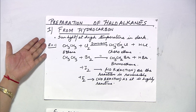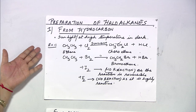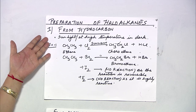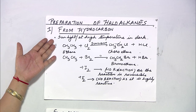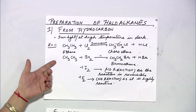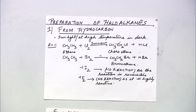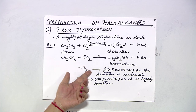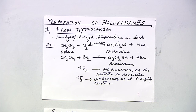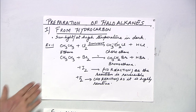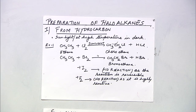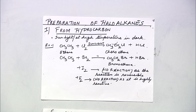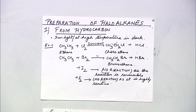Let us learn about the preparation of haloalkanes. Haloalkanes can be prepared from hydrocarbons. Taking ethane reacting with chlorine, in presence of sunlight at high temperature, the conditions are important to form the required product. If you take bromine, you form bromoethane. With iodine there is no reaction as it is reversible, and fluorine does not react at all because it is highly reactive.